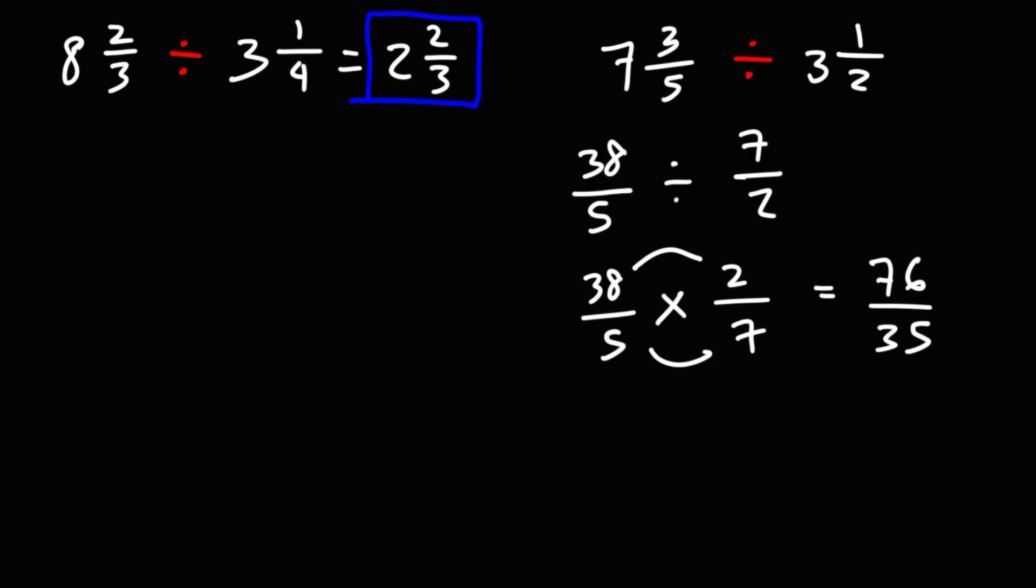So now let's convert this to a mixed number. What is the highest multiple of 35 just under 76? That's going to be 70. So 76, we can write that as 70 plus 6, using the same denominator.